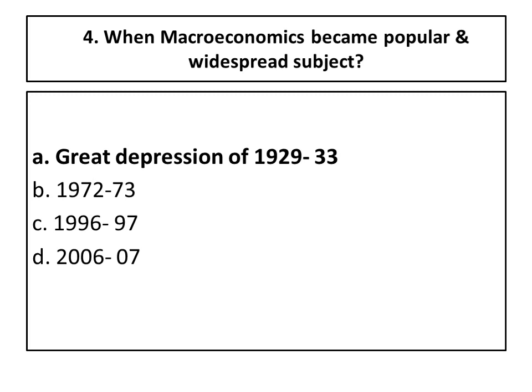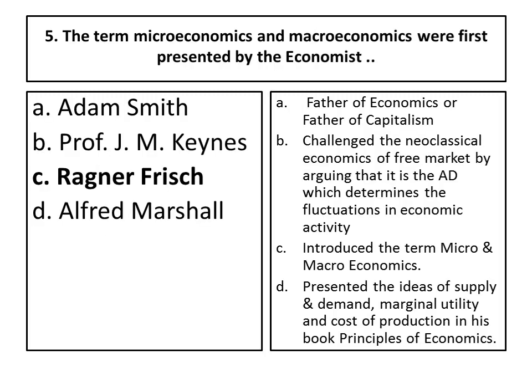Fifth question: the terms microeconomics and macroeconomics were first presented by which economist? The four options are: Adam Smith, Professor J.M. Keynes, Dagnar Frisch, and Alfred Marshall. The right option is C — Dagnar Frisch — who presented the term microeconomics for the first time. Adam Smith was basically the father of economics or father of capitalism, and he did not present the term microeconomics for the first time.